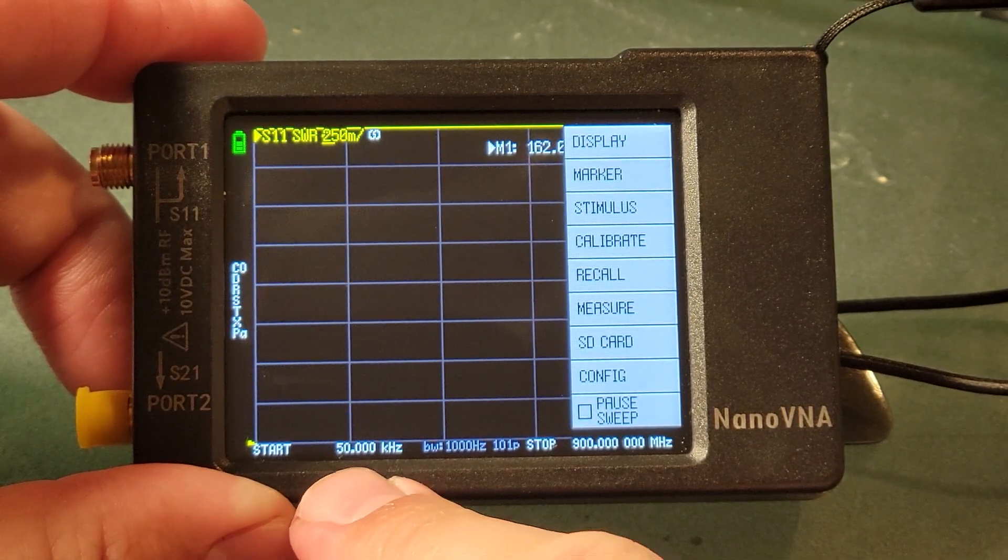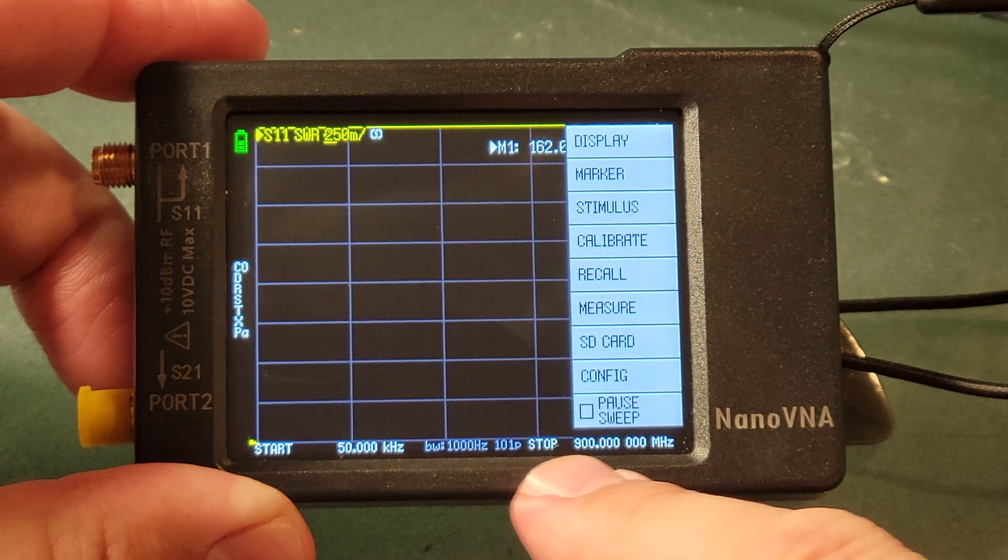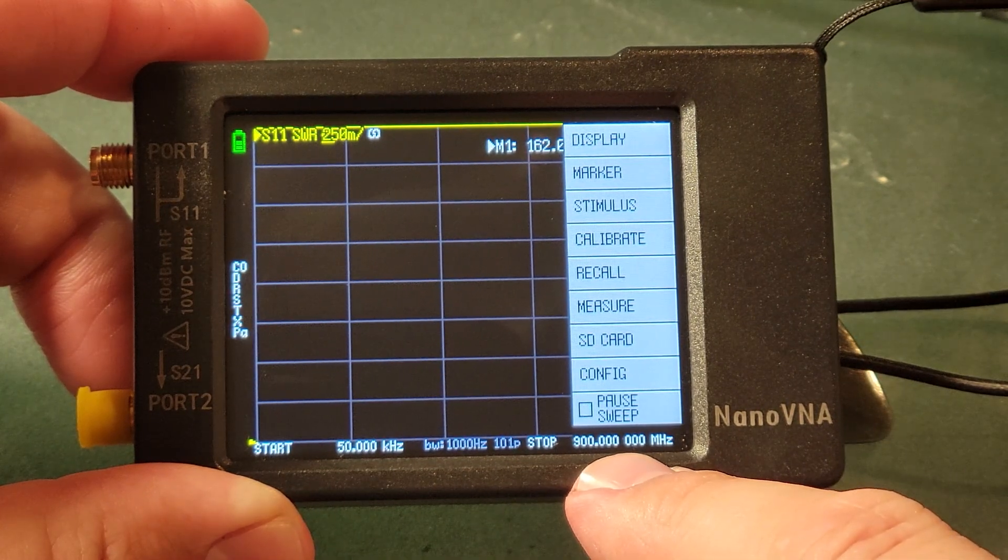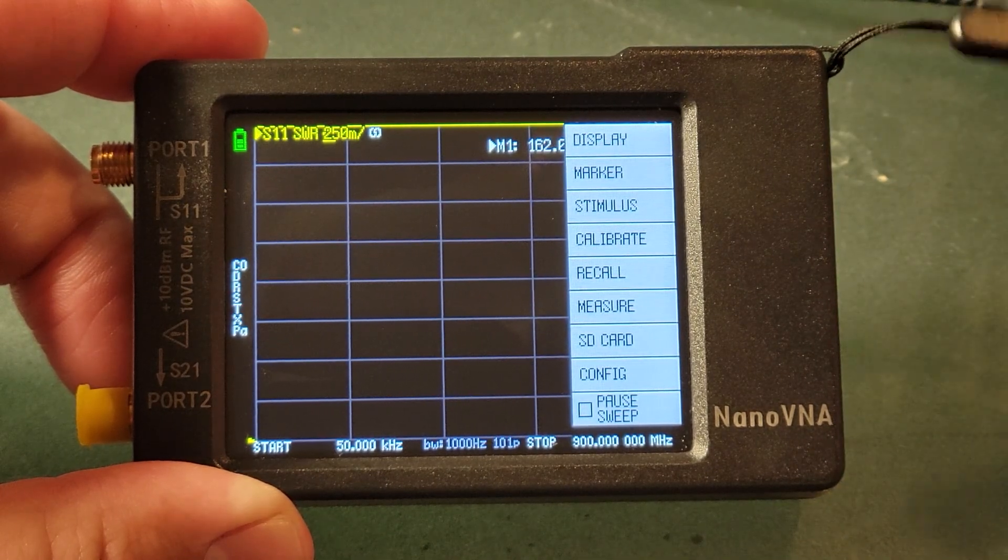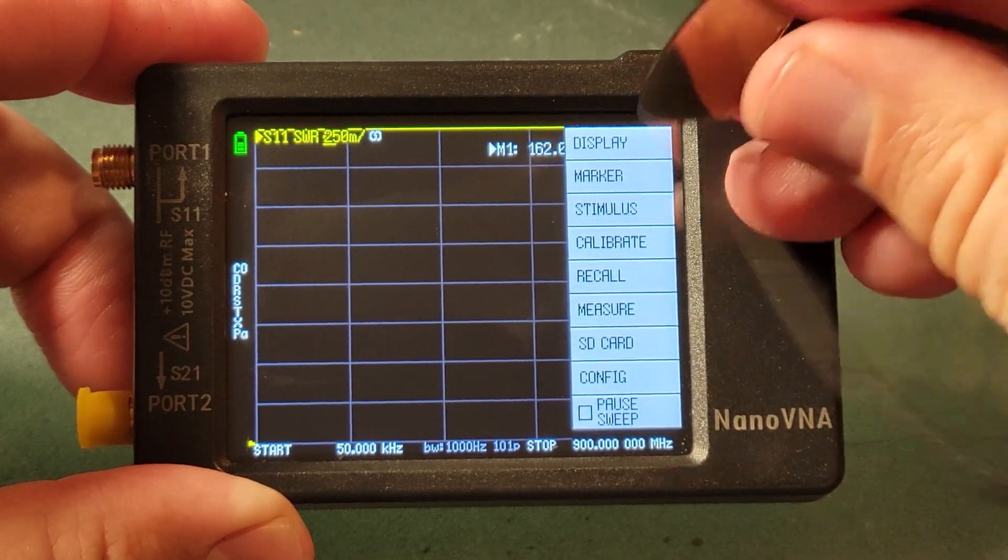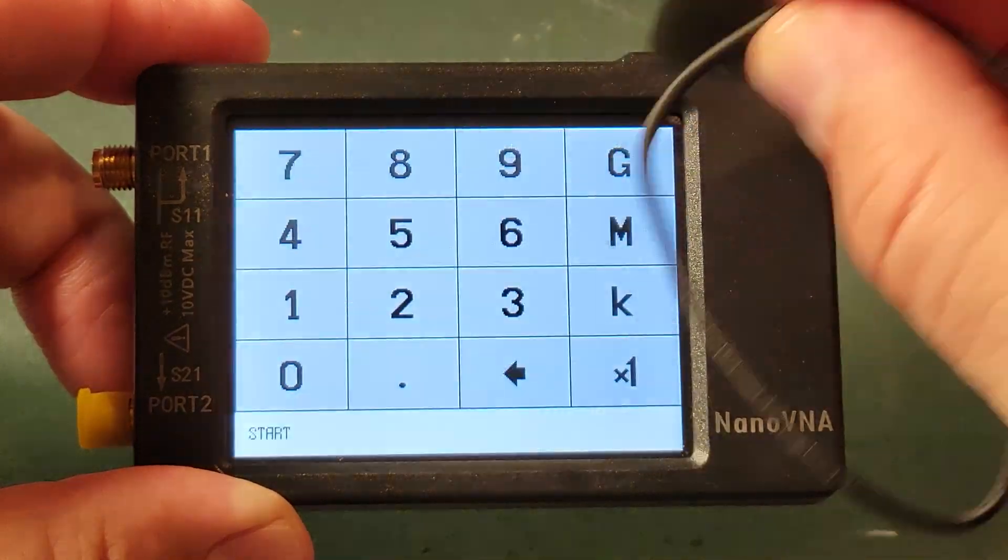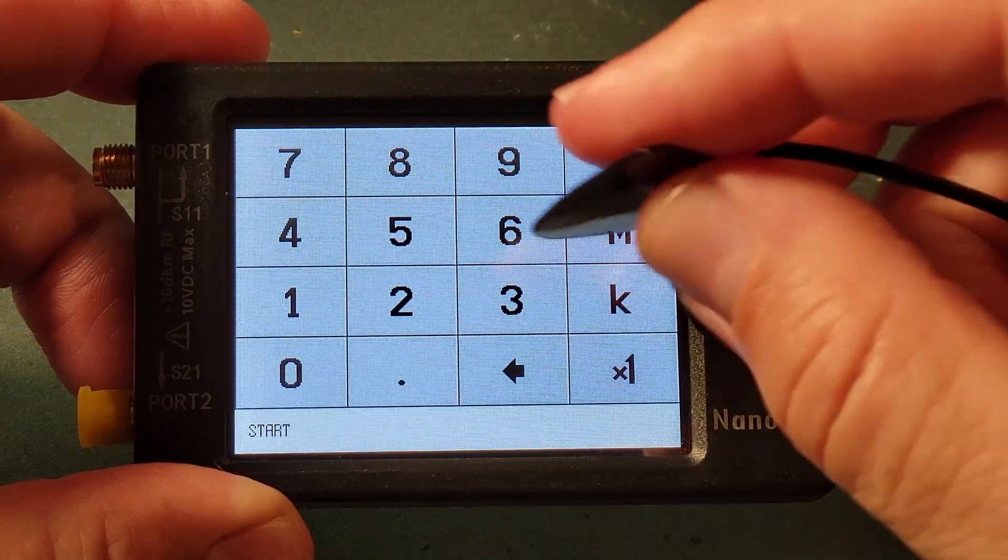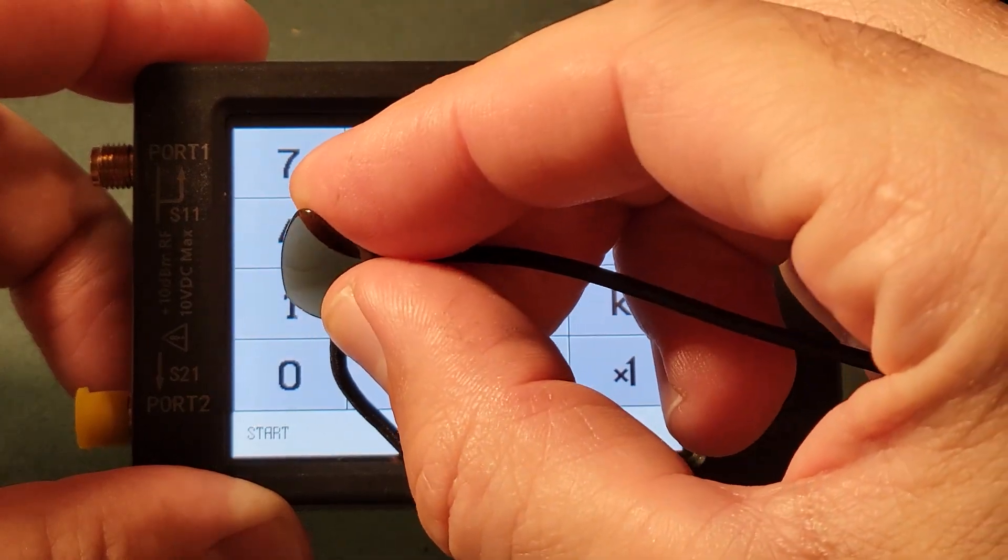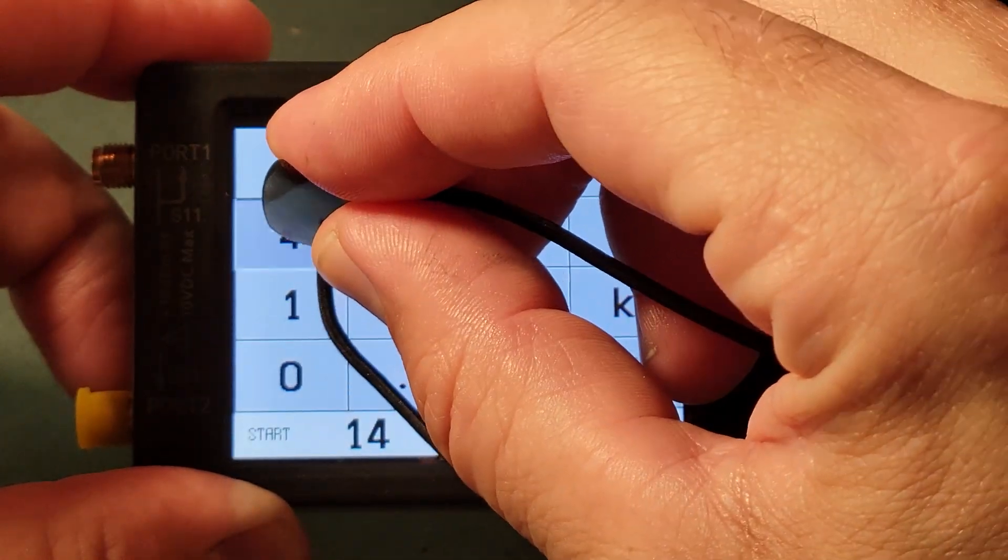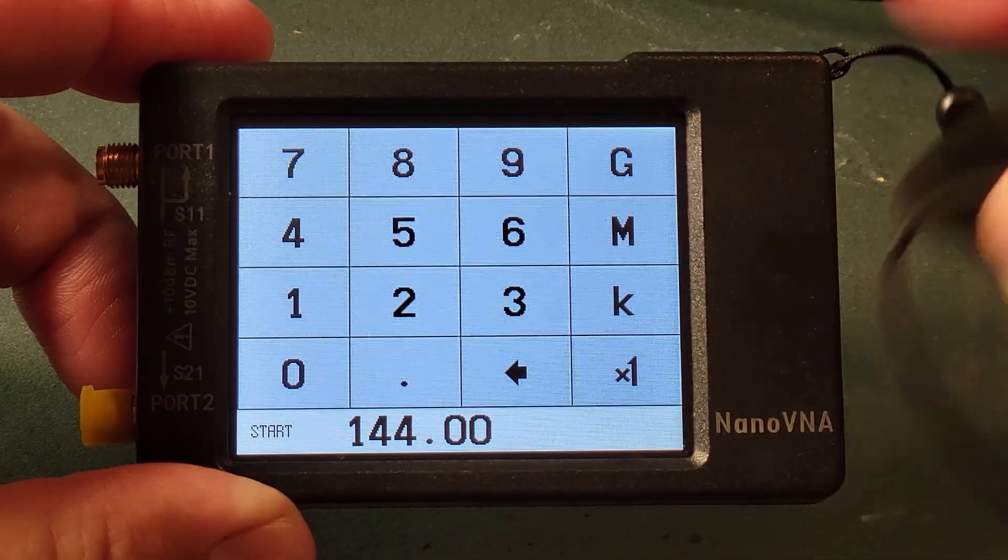If you look at the very bottom of the screen there's a start and we're measuring from 50 kHz all the way up to 900 MHz. Much bigger than what we need and we can quickly change that by going to stimulus. We're going to go to the start point we want to configure and we're going to type in for the VHF which is what I'm going to measure here today. We'll start at 144 MHz just simple like that.